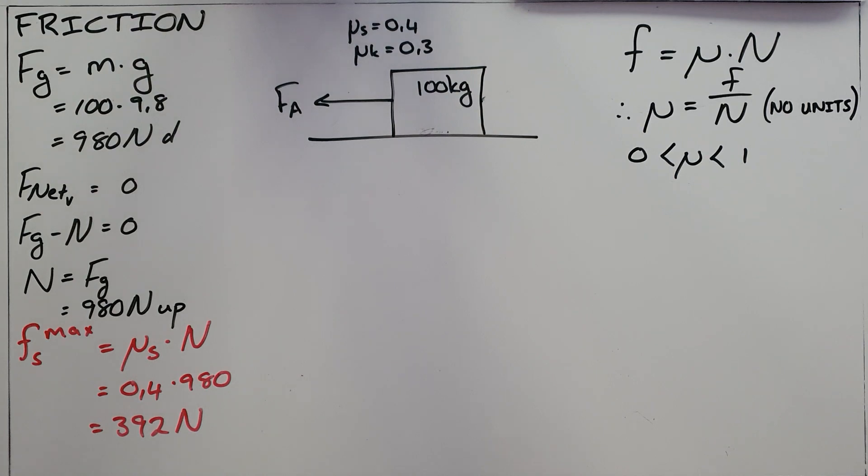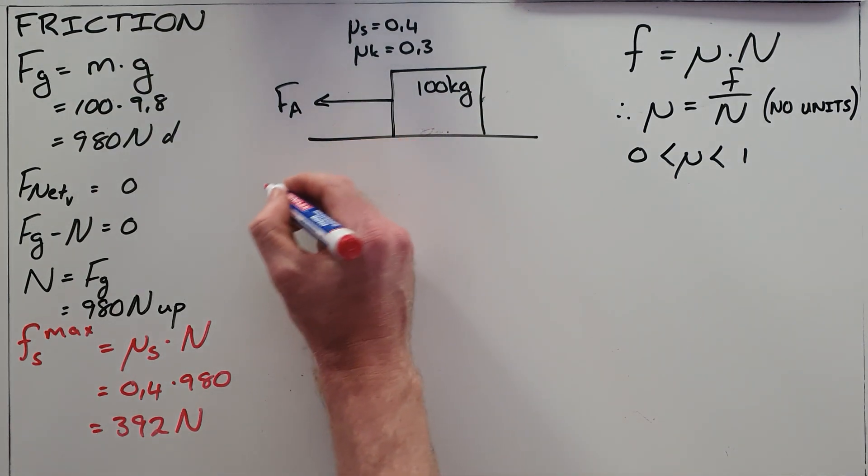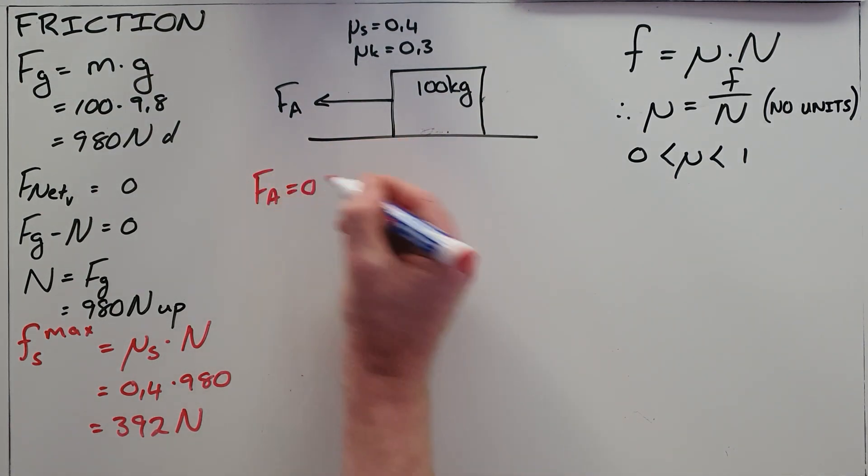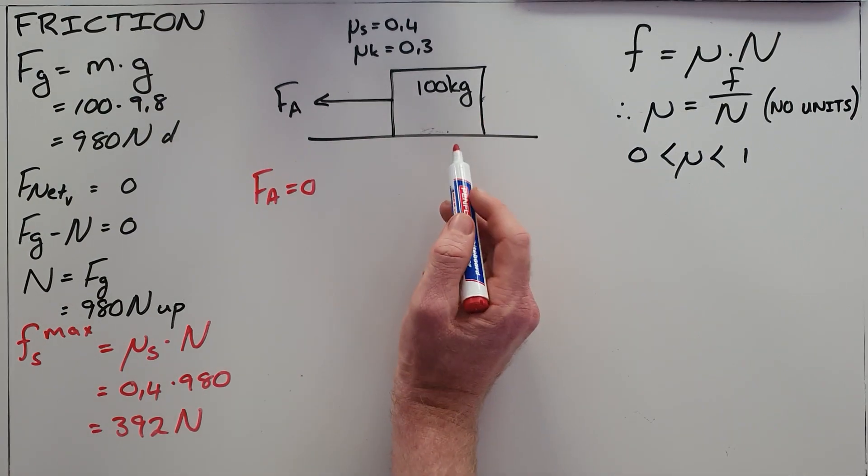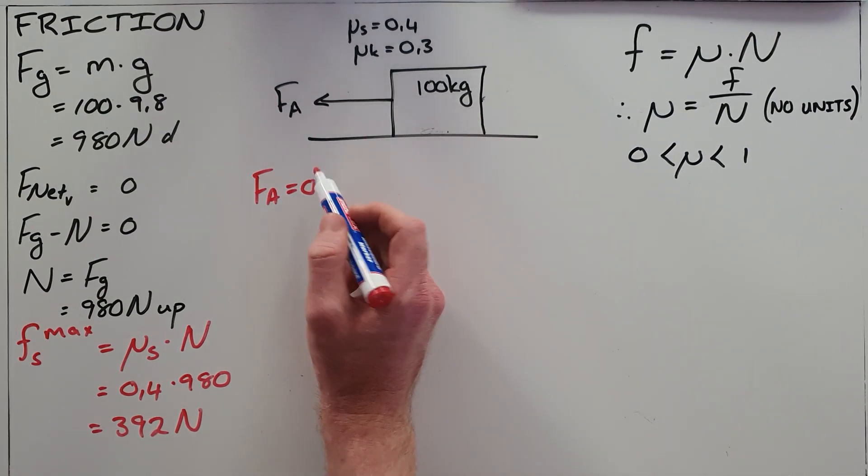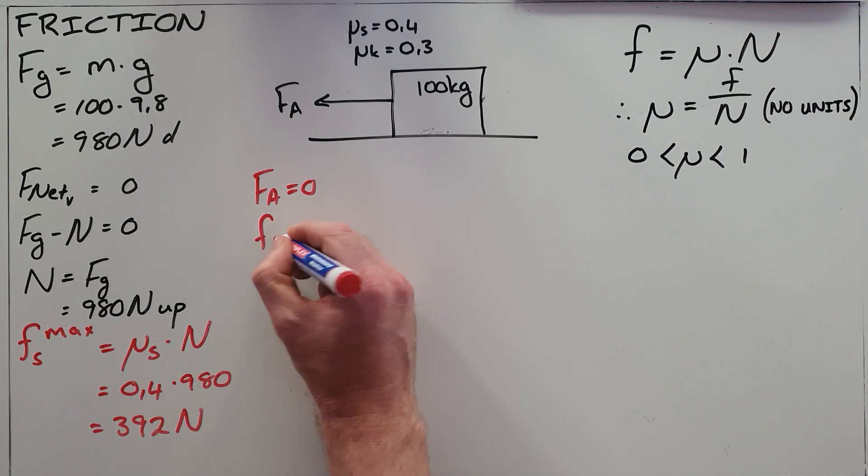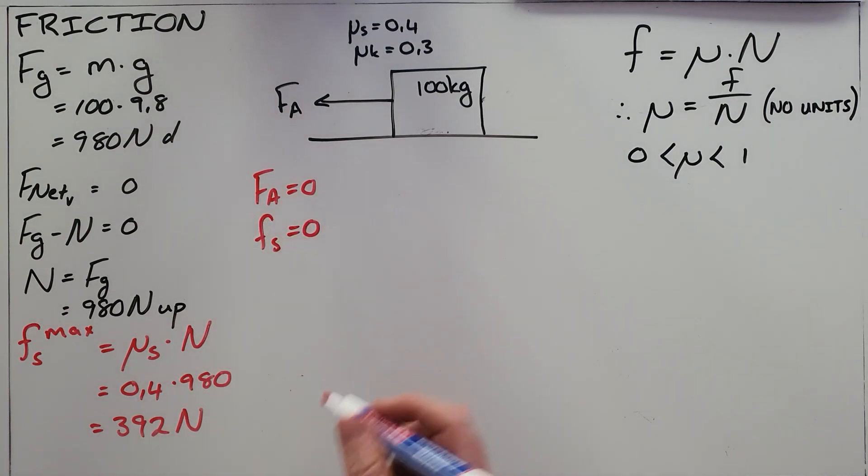In a typical example, if the applied force was zero, there is no attempted motion. Since the applied force is zero, the frictional force is also zero since friction only attempts to oppose motion.